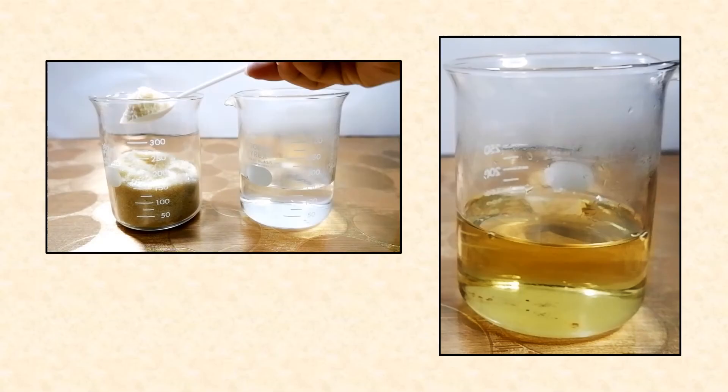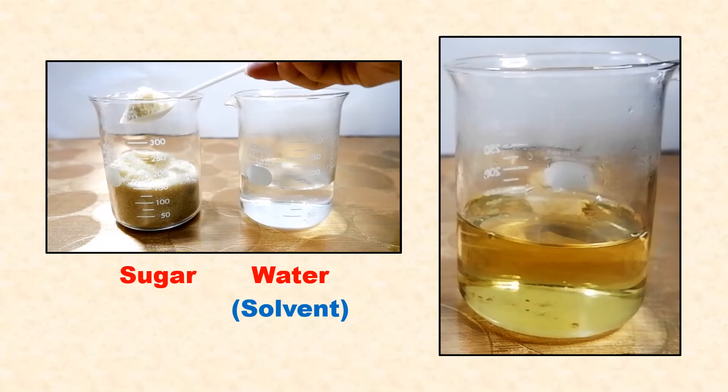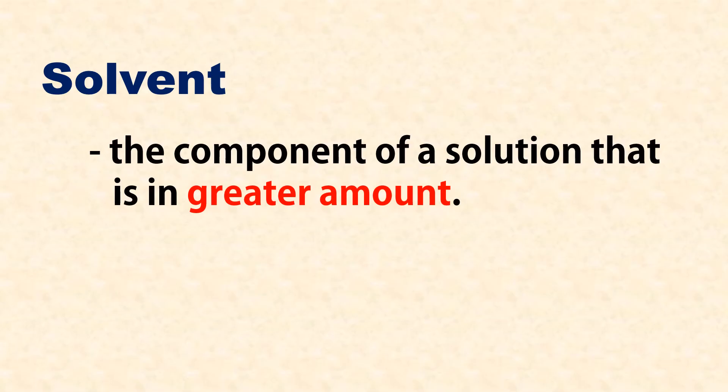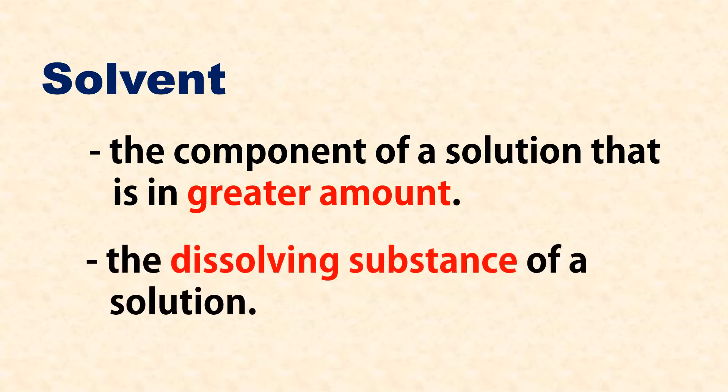This is a solution. Its components are sugar and water. Between the two, the solvent is water, because the solvent is the component of a solution that is in greater amounts — it is the dissolving substance of a solution.